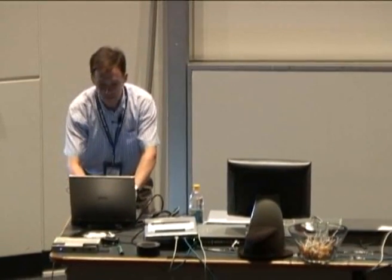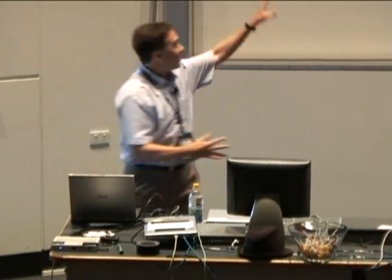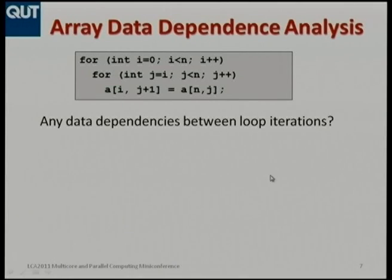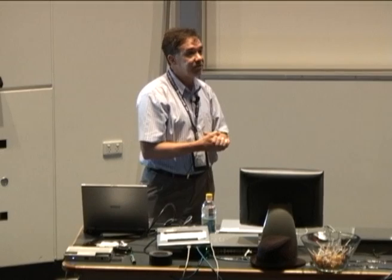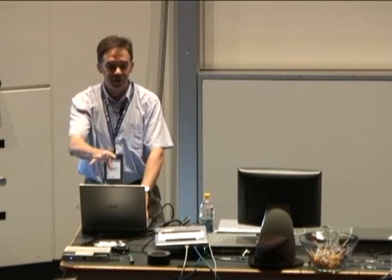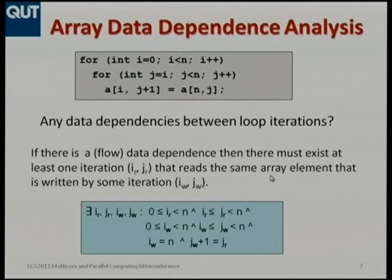That was trivial in the previous slide because we had simple integer variables a and b — you can tell they're different. But with arrays as found in scientific applications typically run on high-performance computers, we ask: can we parallelize the i loop or the inner j loop? We have to ask whether there are any inter-iteration dependencies — any iteration that reads some value written by an earlier iteration. Automatic parallelizing compilers can address this sort of numeric kernel by asking whether there exist iterations i and j such that various constraints exist. You can solve this problem — it's NP complete, but you can still get a yes or no answer.